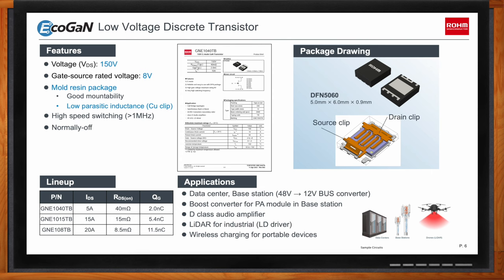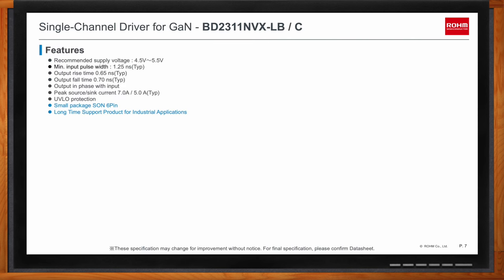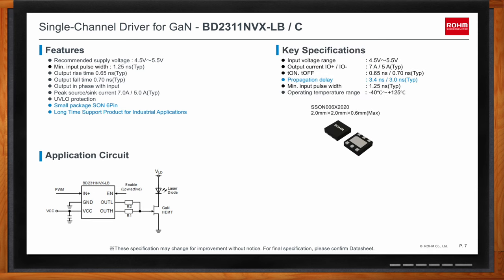These two single channel gate drivers are optimized for GaN applications. Key points include a 3 nanosecond typical propagation delay, which improves overall system efficiency, and a small 6-pin package that minimizes board space. The -LB product variant has long-term product support from Rome, making it excellent for industrial applications. The -C product variant is AEC-Q100 Grade 1 qualified for automotive applications.